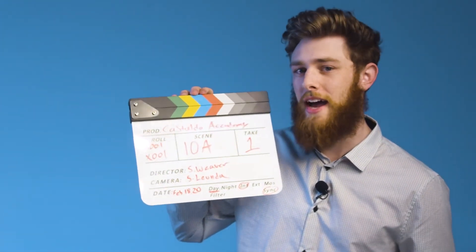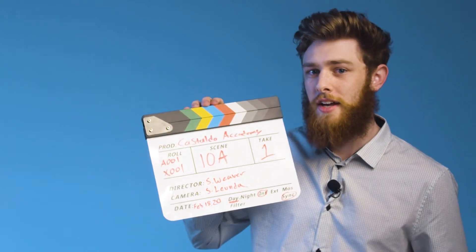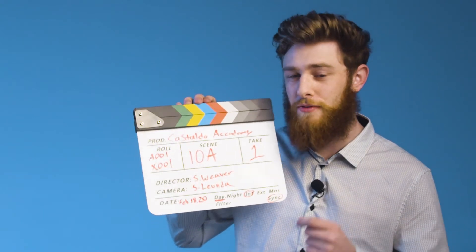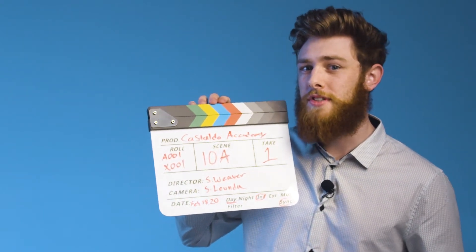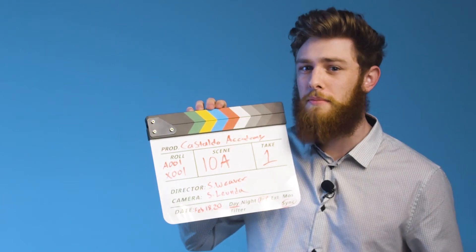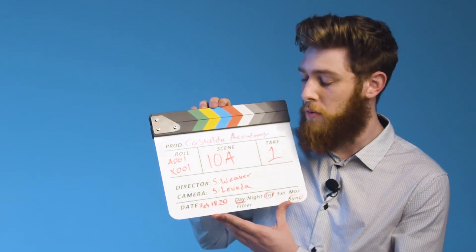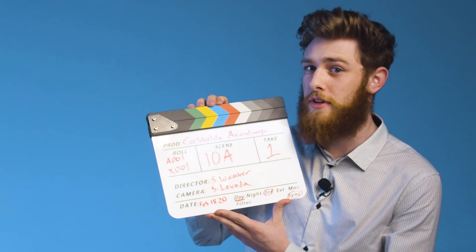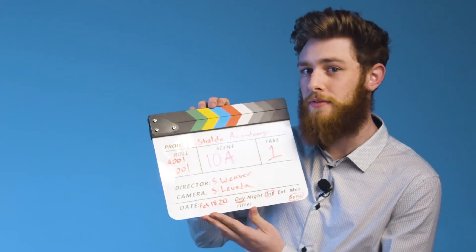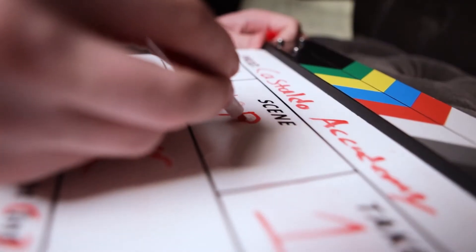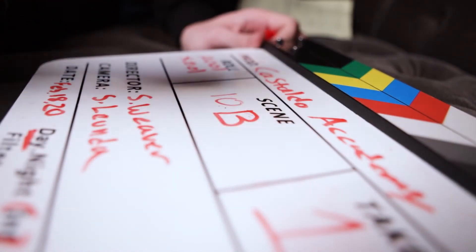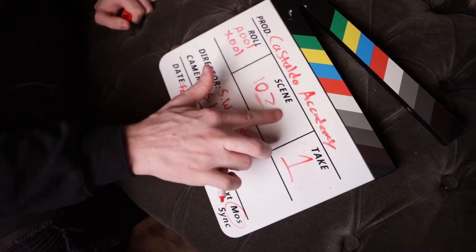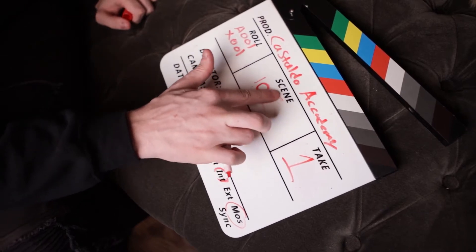You noticed I said 'scene 10 alpha' instead of 'scene 10A.' The reason I used alpha is because sometimes when saying the letters, they can get confusing and they sound much like numbers. So we have a bunch of different code names for different letters — A would be alpha, B would be bravo, and C would be Charlie. And since we're on this topic, there are some letters that you're going to want to not write down on the slate: that's I, O, and Z. We do this because they look very much like numbers, so just make sure you don't write those down.